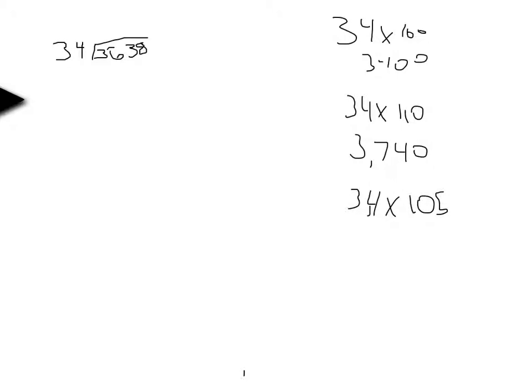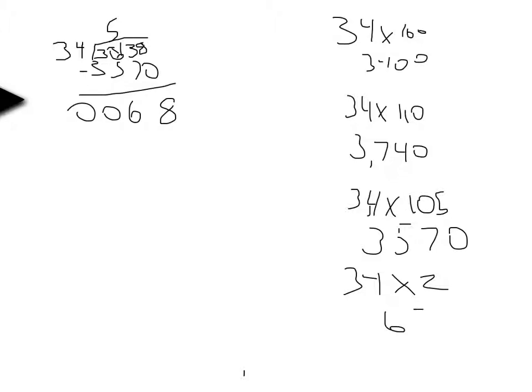And so then I subtracted 3,570 from 3,638, which gives 68. So now we know that 34 times 2 equals 68.